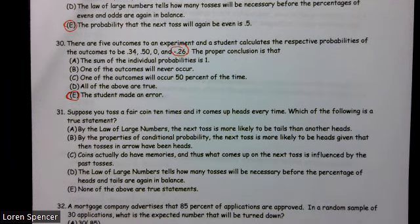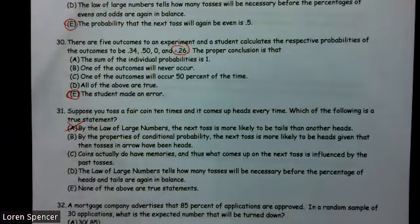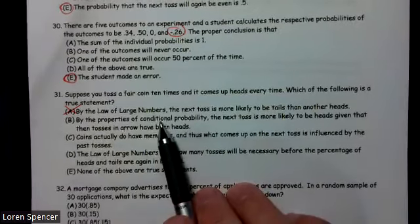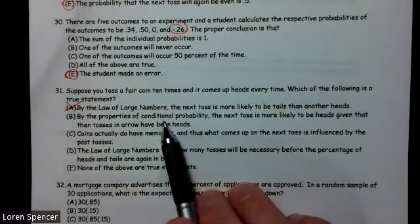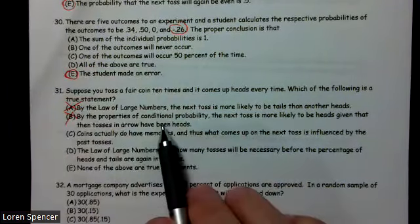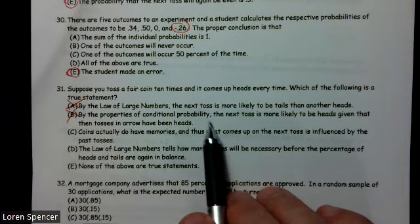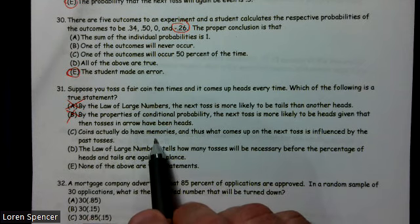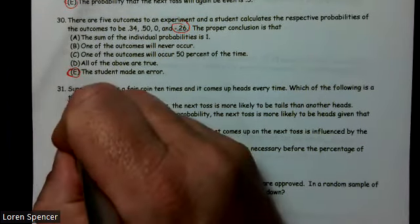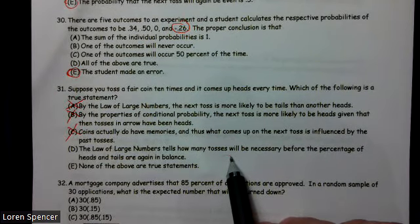It goes to overall tosses, and since when we toss a coin, each toss is independent, law of large numbers does not impact individuals. It's for large numbers, not for an individual. By properties of conditional probability, the next toss is more likely. No, all probabilities are independent, so what's happened in the past will not impact the future. Coins actually do have memories. No, that's false. The law of large numbers tells us how many tosses will be necessary. No.